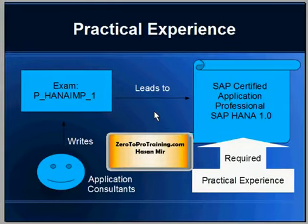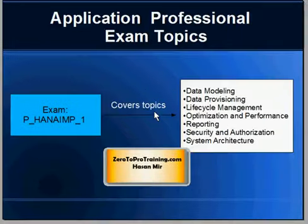This certification goes well with some experience. The professional certification will test your depth of knowledge more aggressively than the associate level certification. Some topics are the same, and some are additional. Examples include data modeling, data provisioning, life cycle management, optimization and performance, reporting, security and authorization, and system architecture — again, not a complete list.